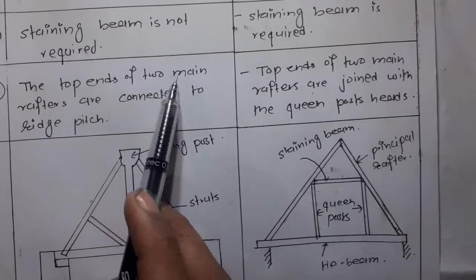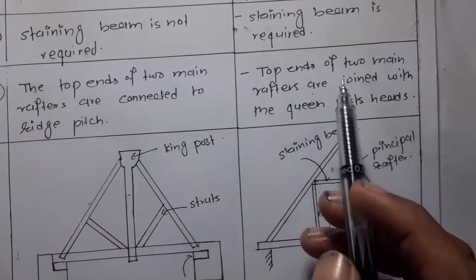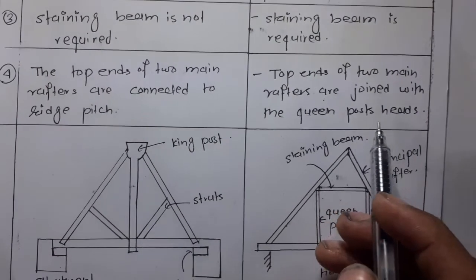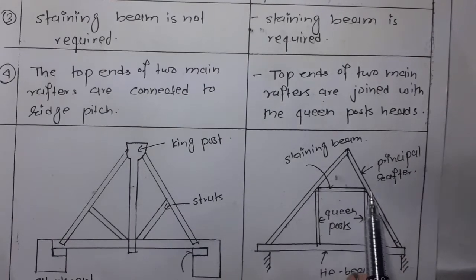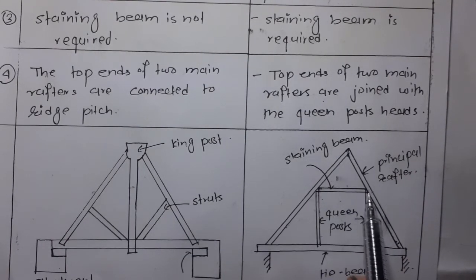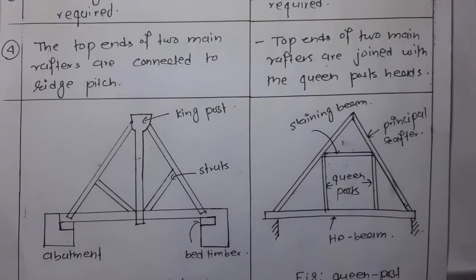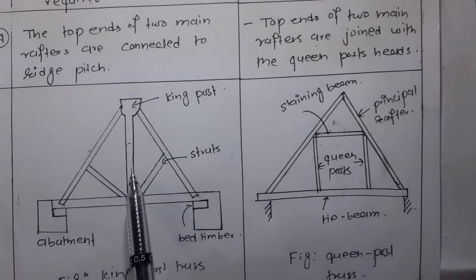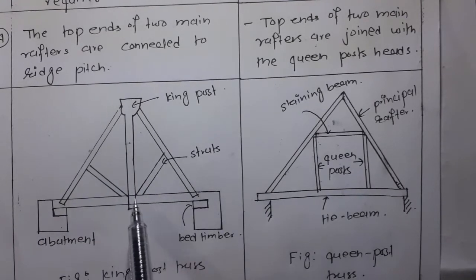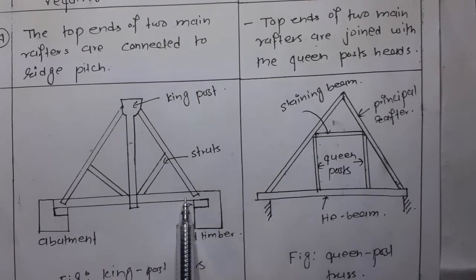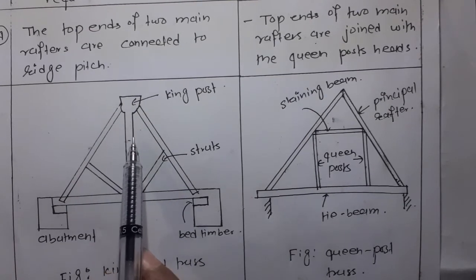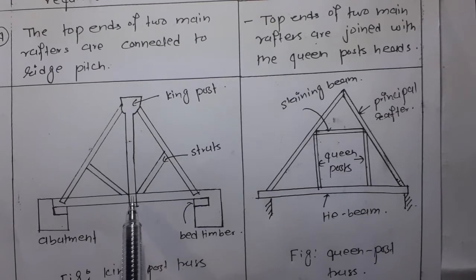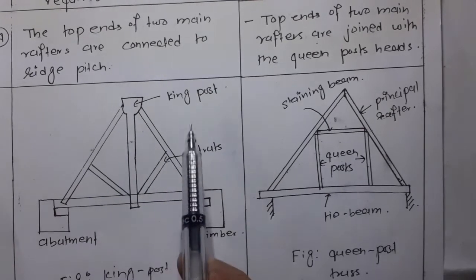The top ends of the two main rafters are connected at the ridge, and the top ends of the two main rafters are joined with the queen post head. Here is the figure of king post truss and queen post truss. This horizontal member is known as a tie beam, and this vertical member placed in the center of the tie beam is known as a king post.